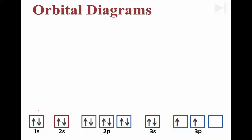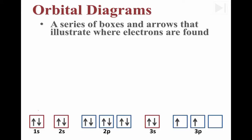This is an orbital diagram pictured at the bottom of the screen, which simply means there's a series of boxes and arrows that illustrate where the electrons are found in this atom.